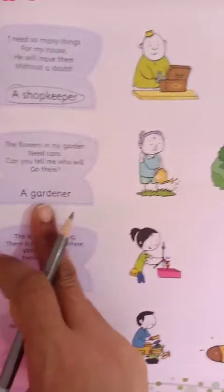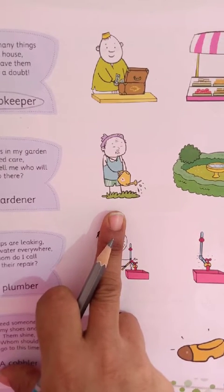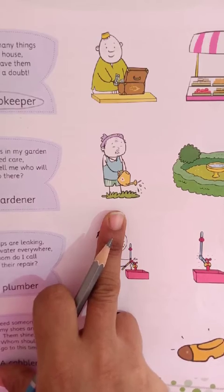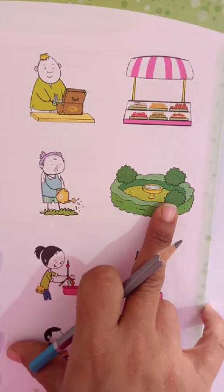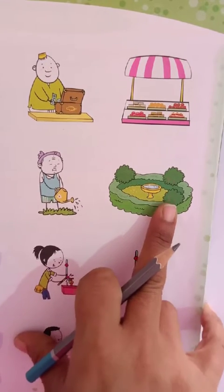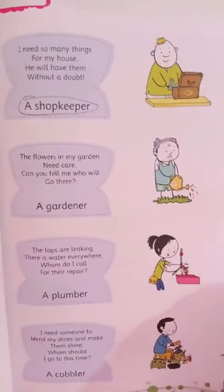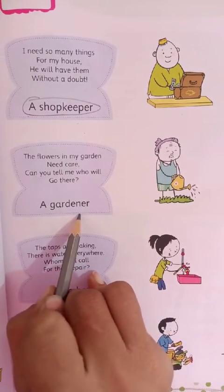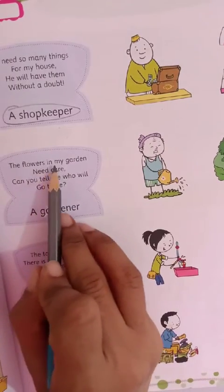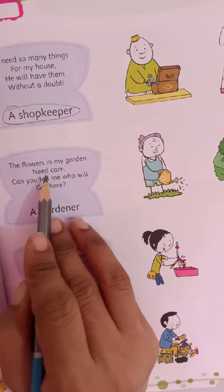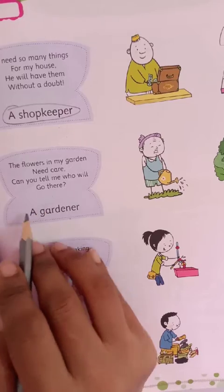Now next is a gardener. Who is a gardener? Gardener jo aapke garden ki dekhbhaal karta hai, dhyan rakhta hai, paudhon mein paani deta hai, plants ko watering karta hai, plants ka dhyan rakhta hai. Aap kai baar park mein jaate ho, toh aapko phool todne se, leaf todne se mana karte hain — toh vo kaun hota hai? Gardener. Right. Maali — jisko Hindi mein aap maali bolte ho, English mein gardener. Jo flowers in my house, in my garden need care — kaun vo sab karta hai, plant wala kaam? Gardener.